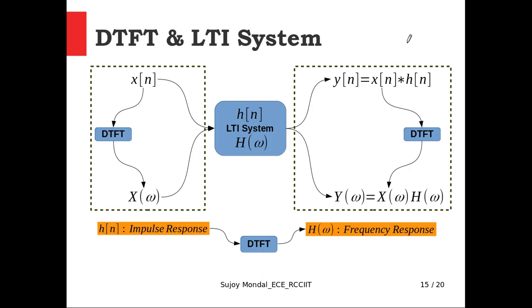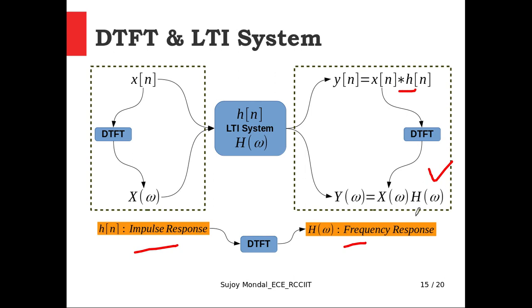How are the DTFT and LTI systems related? For a linear time-invariant discrete-time system, h[n] is the impulse response and H(ω) is the frequency response — these form a DTFT pair. In the time domain, the output y[n] equals x[n] convolved with h[n]. In the frequency domain, Y(ω) equals X(ω) multiplied by H(ω) — a simple multiplication. This is a very important concept for solving practical problems.